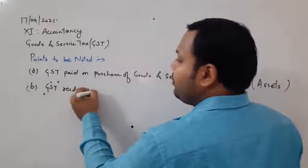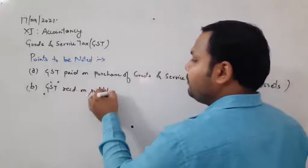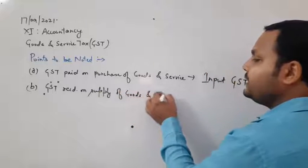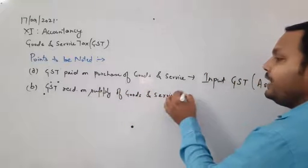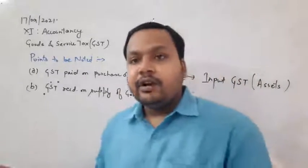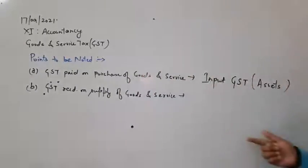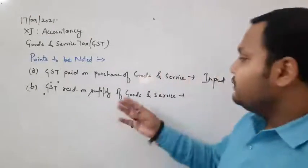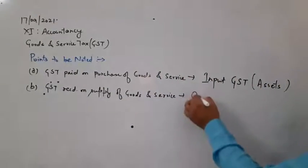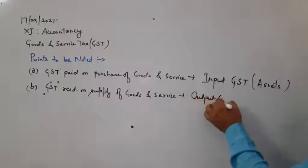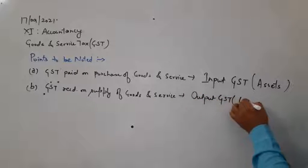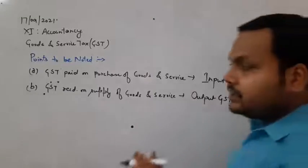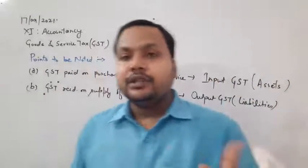Point number two: GST received on supply of goods and services. When we supply or provide goods and services, the GST received on that supply is called Output GST. This is our liability because we owe this GST to the government.